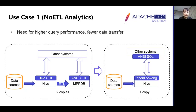Here is the first use case. Our BI system needs high-performance data processing, but Hive's performance was not satisfactory, so we had to copy data from Hive to an MPP database via ETL. When we use OpenLooker, our application connects using standard SQL and accesses data in various formats directly on HDFS via OpenLooker's Hive connector, using metadata from the Hive metastore. In this way, we only need one data copy and achieve much higher query performance.